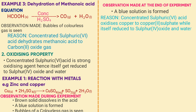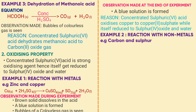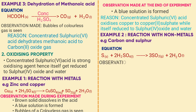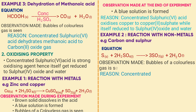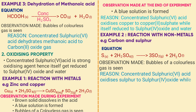Reaction with non-metals, e.g. carbon and sulfur. Using sulfur as an example: S + 2H₂SO₄ → 3SO₂ + 2H₂O. Observation: bubbles of a colourless gas are seen. Reason: concentrated sulfuric acid oxidizes sulfur to sulfur dioxide while it is self-reduced to sulfur dioxide and water.